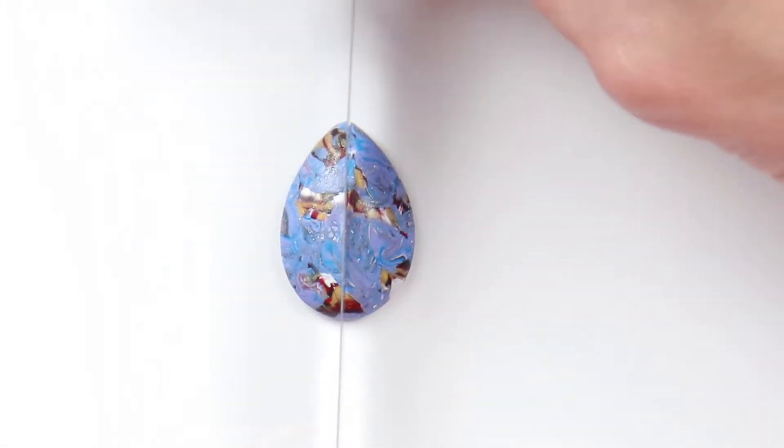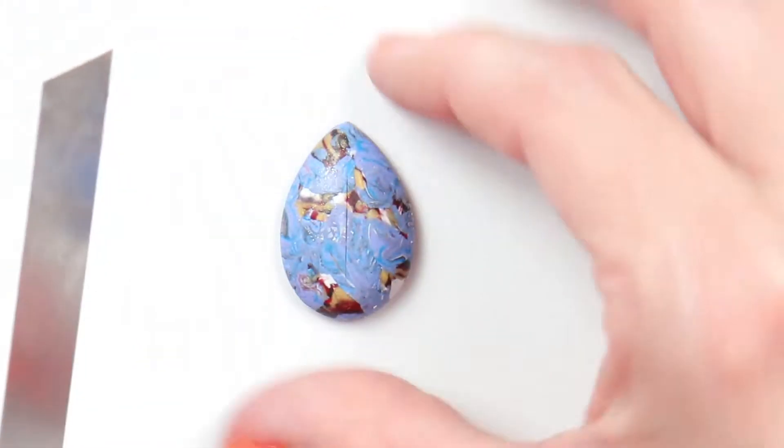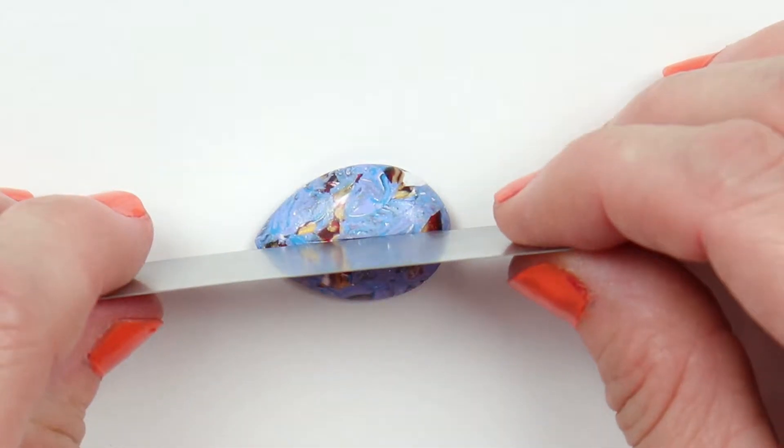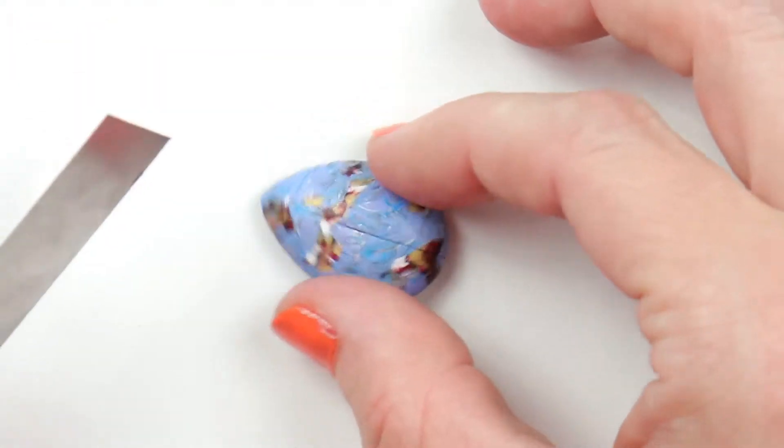Take your tissue blade and make decorative score lines into the clay. Don't press too hard, just enough to leave an indentation.